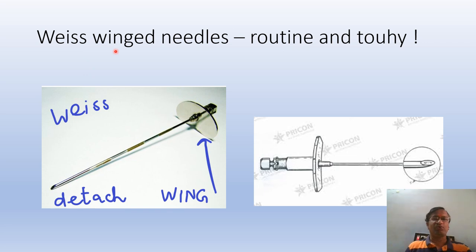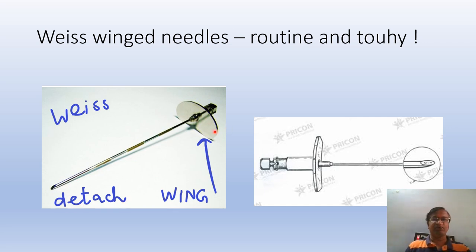These are winged needles. This is what is called a wing. The wing can be either permanent or detachable. You can see the winged needles here — sometimes you can remove the wing, and sometimes it is permanently attached.